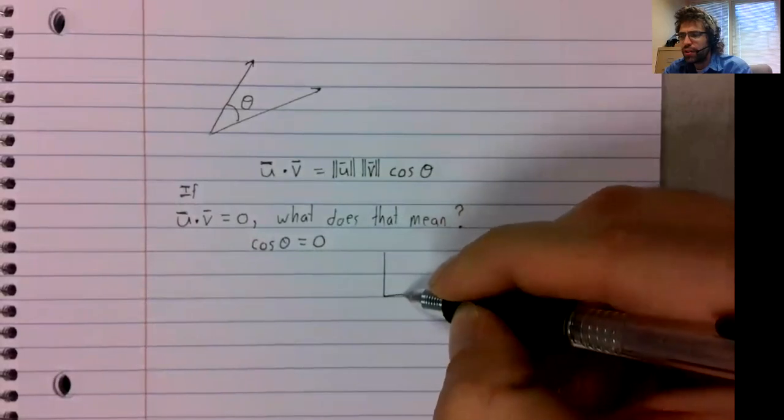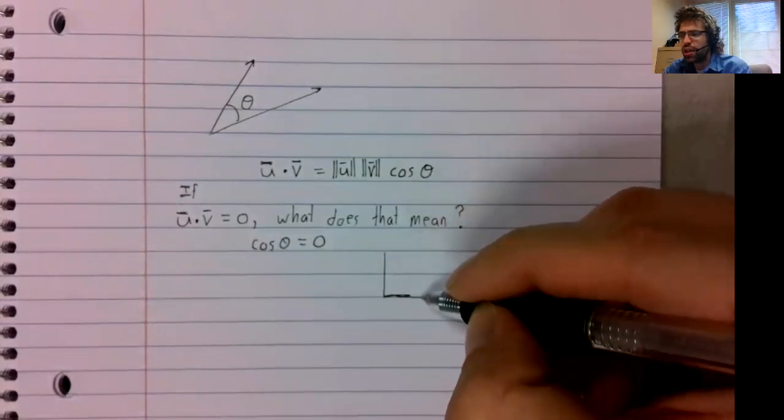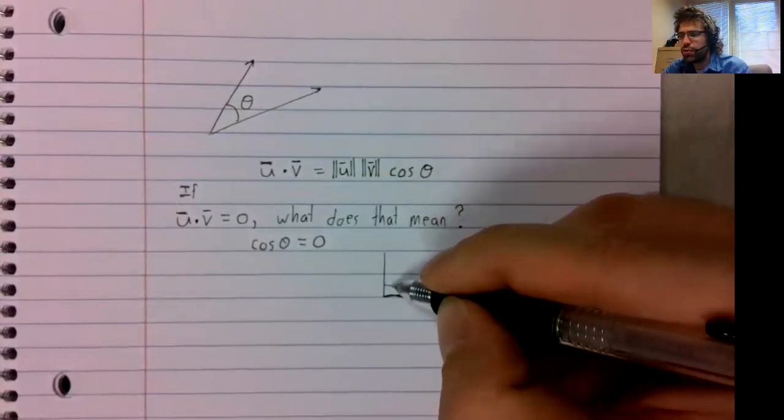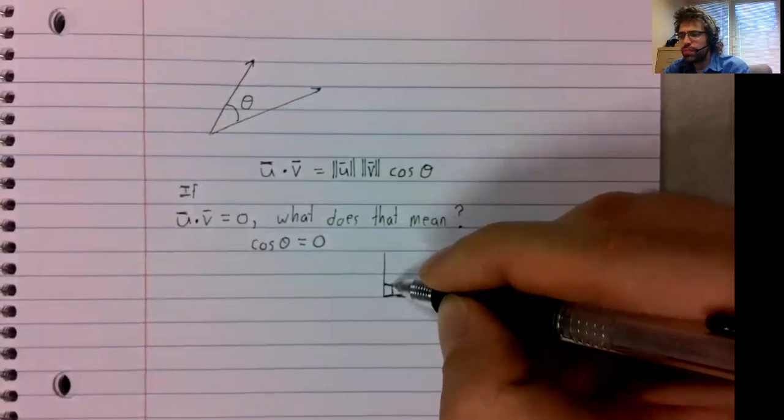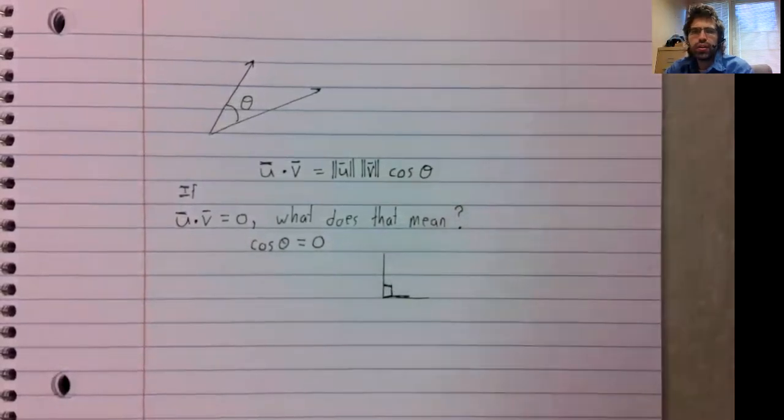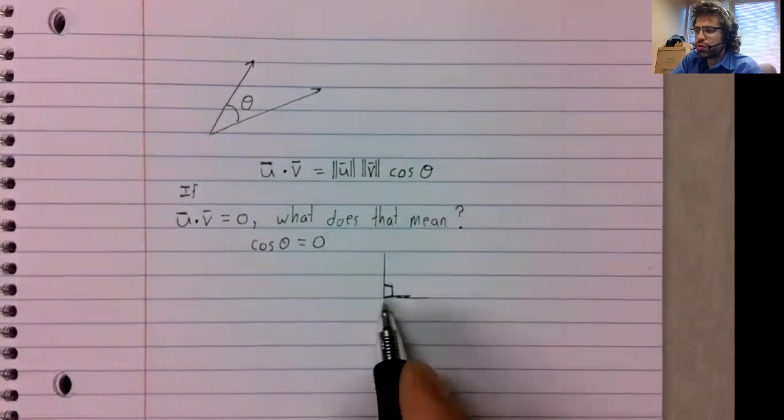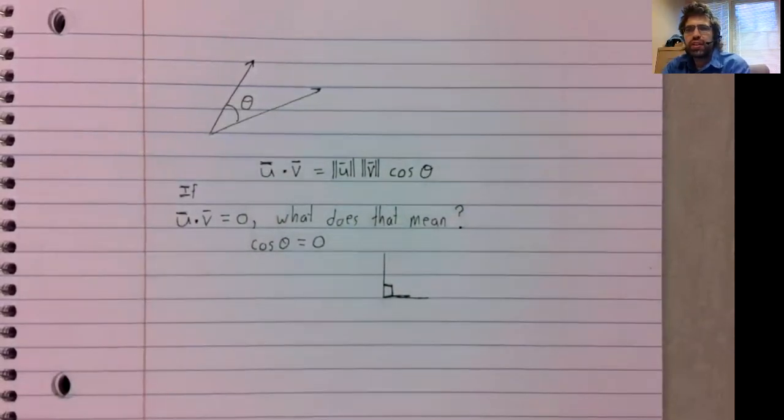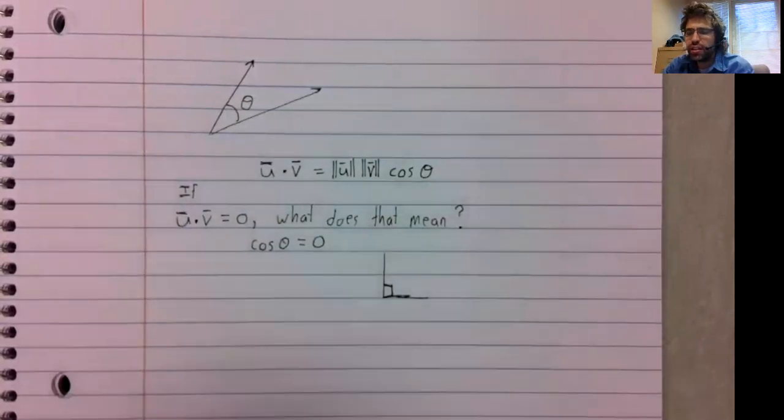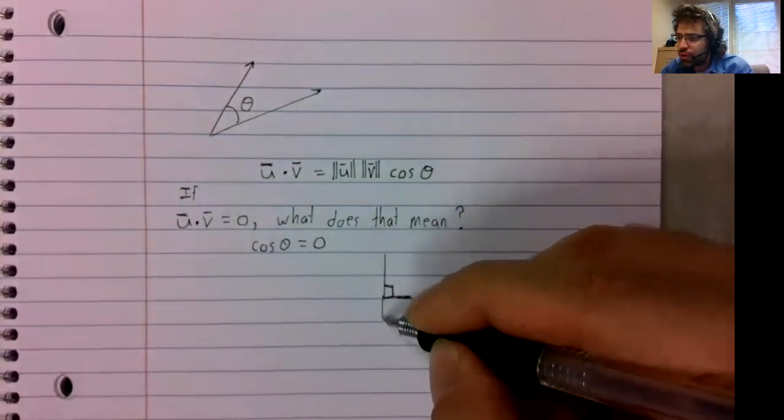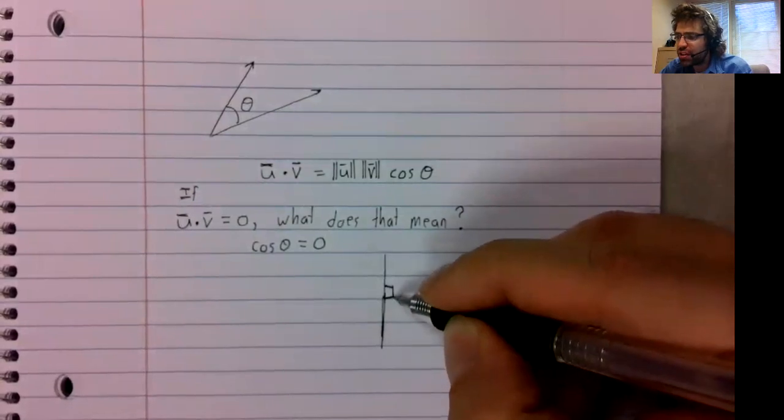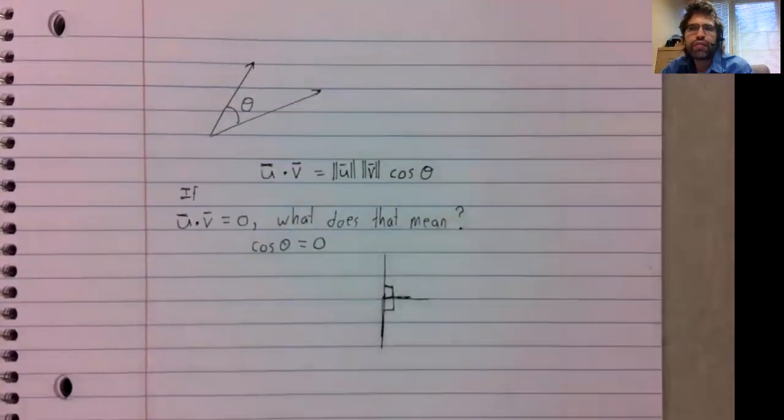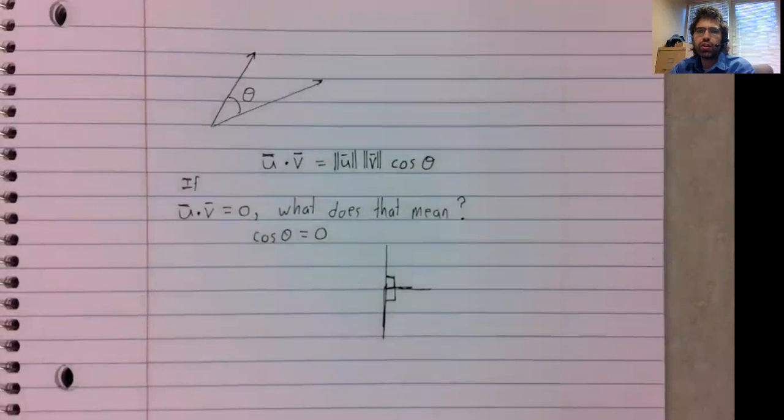And when is a cosine zero? The cosine of an angle is zero if that angle is 90 degrees or something that has 90 degrees as its reference angle.